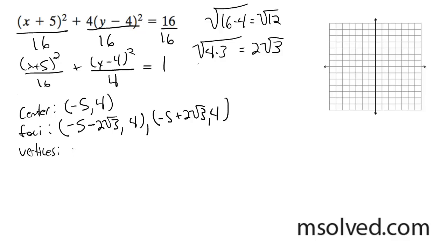And then for vertices, it's going to be along the major axis: so it's going to be negative 9, 4, and then negative 5 plus 4, which gives you negative 1, 4.